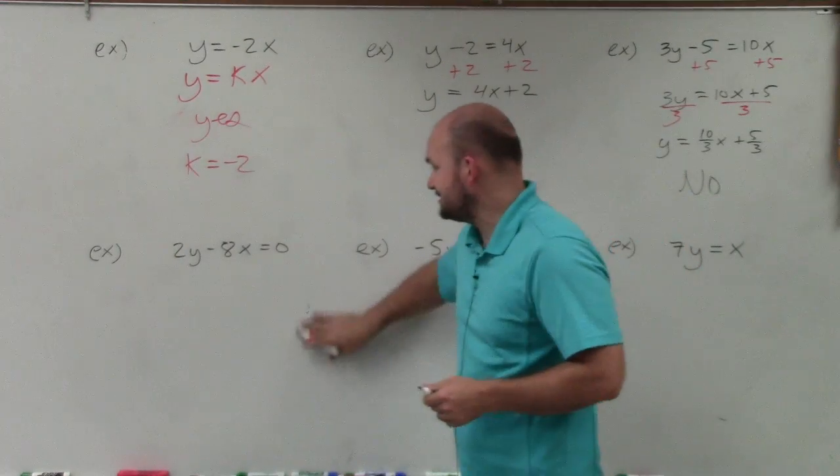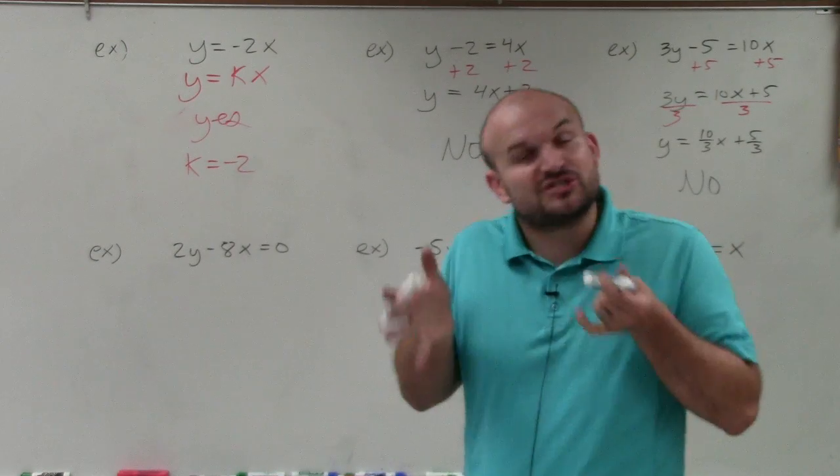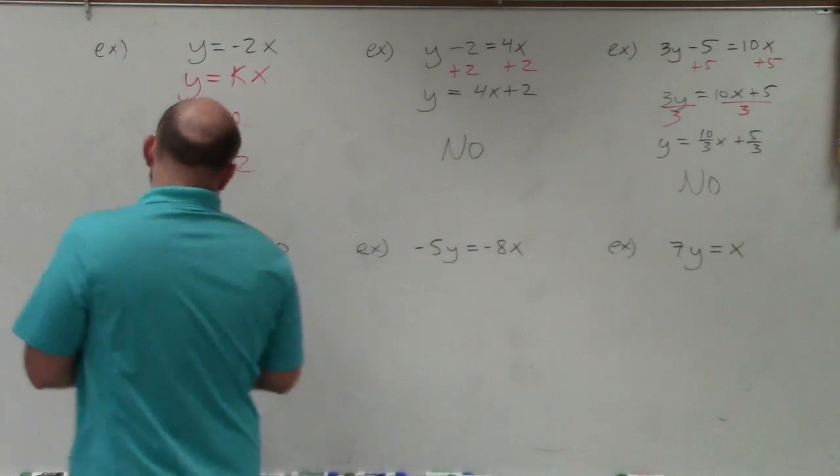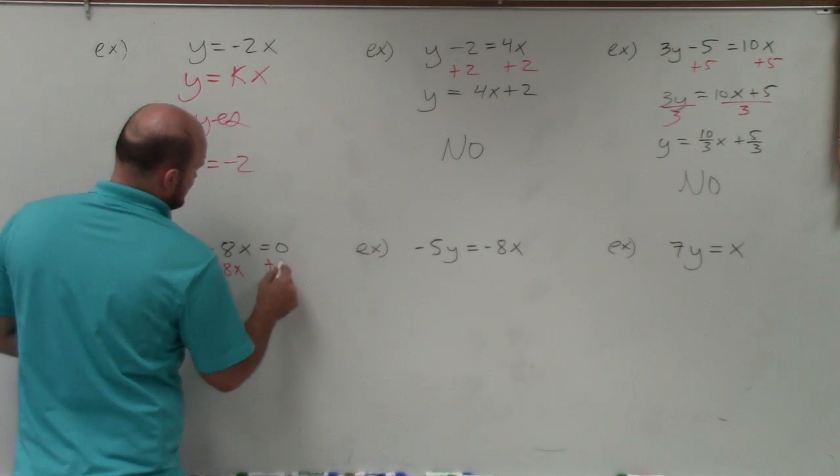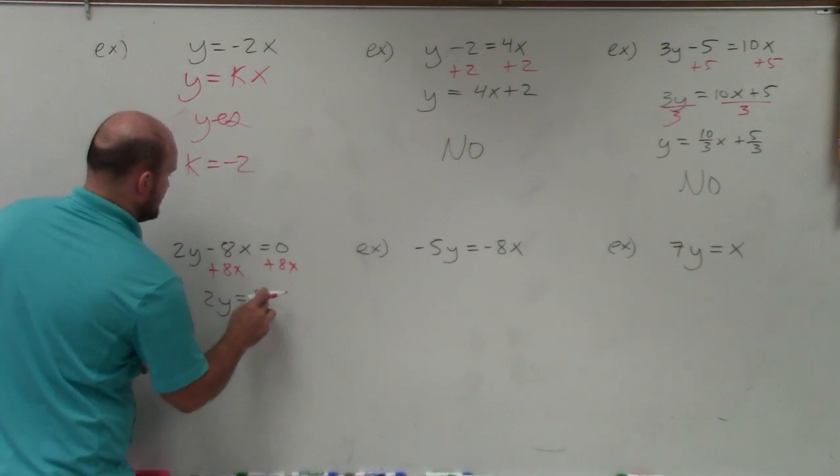Now, this one gets a lot of students. Again, they see subtraction. They might say, no, it's not. Well, again, don't always just rush the judgment. Solve for y. Put it in the form y equals kx. So to do that, I need to solve for y. So I add an 8x to both sides. Therefore, then I have 2y is equal to 8x.